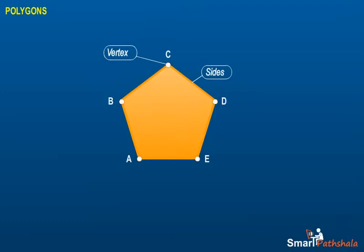The vertices of polygon A, B, C, D, E are A, B, C, D, and E.